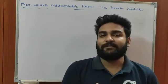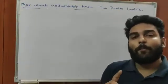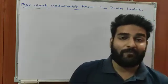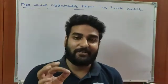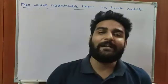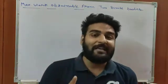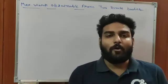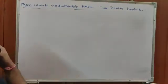Today's class we are going to study the maximum work obtainable if we operate between two finite bodies. Let's suppose we have two finite bodies at temperature T1 and temperature T2. If we operate between these two bodies, then what will be the maximum work obtainable from these?